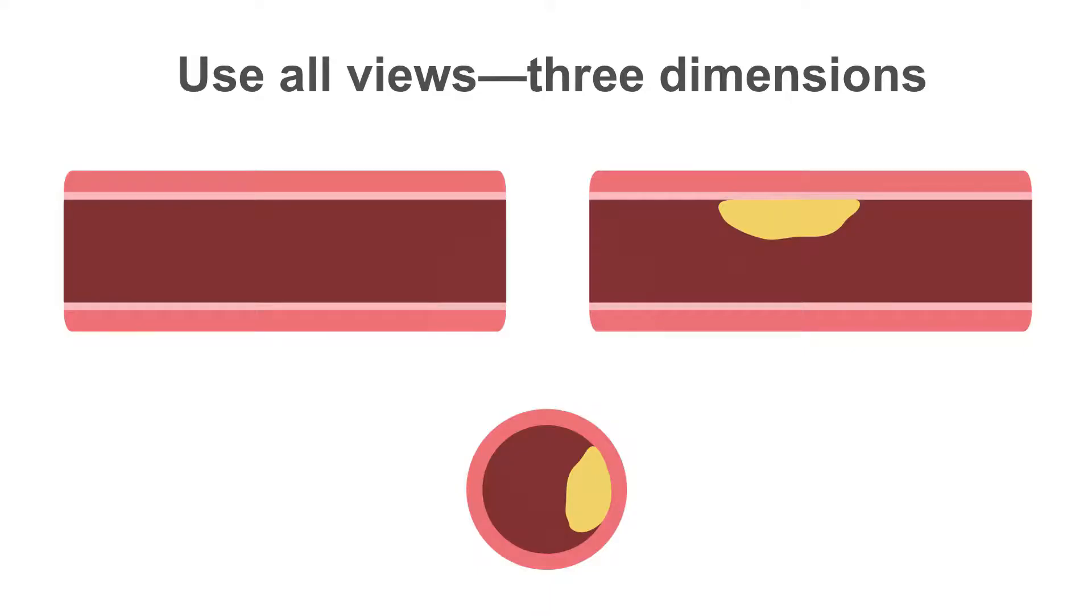When grading plaque, it is important to remember to look at all of the data at your disposal. If we consider the above example, a plaque may not be seen in one plane, but may be present in another. Therefore, it is important to align your crosshairs in two orthogonal planes and to interpret the plaque in the short axis to see the vessel lumen on face. In this example, the plaque would be graded mild in severity.